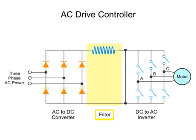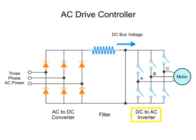The filtered DC bus voltage then passes through to the inverter. At the inverter, an array of fast-acting switches convert the DC bus voltage into pulses at a constant magnitude that are proportional to the DC bus voltage.